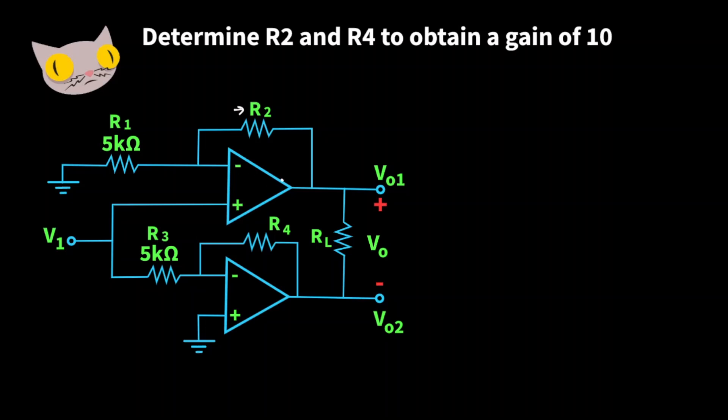The output load is floating, and the load seen by each op amp is going to be RL over 2. This can be accounted for by doubling the gain seen across the top op amp. The input to the negative terminal on the op amp across resistor 1 is just 0.